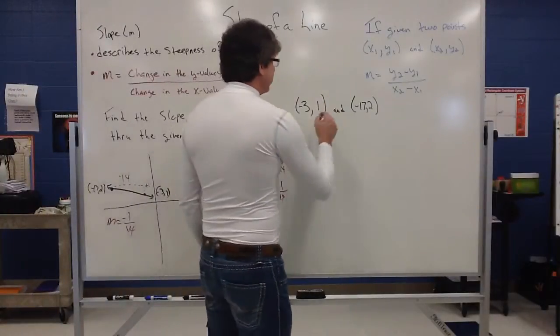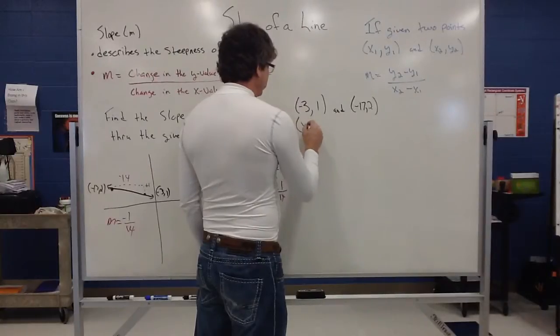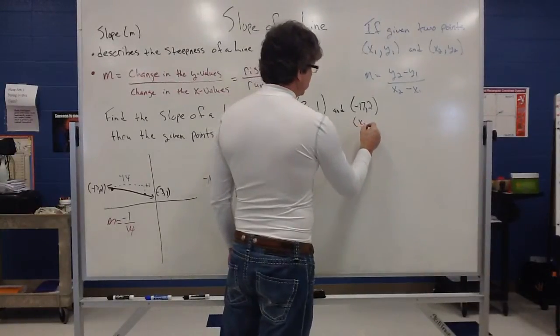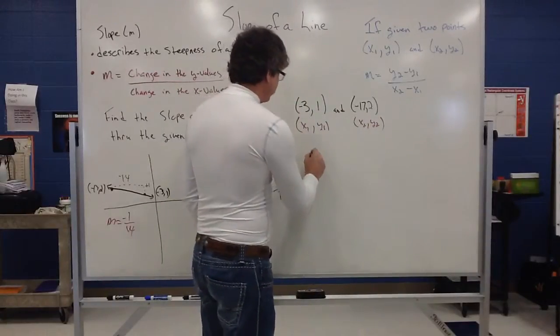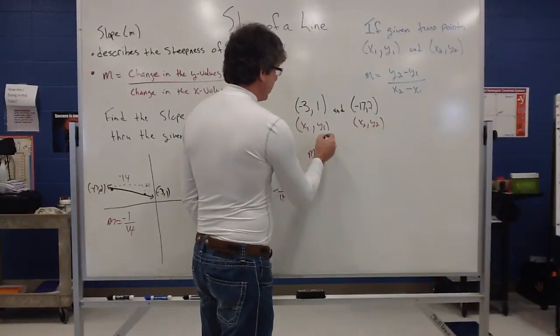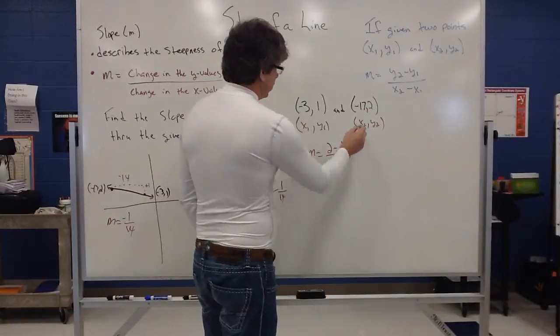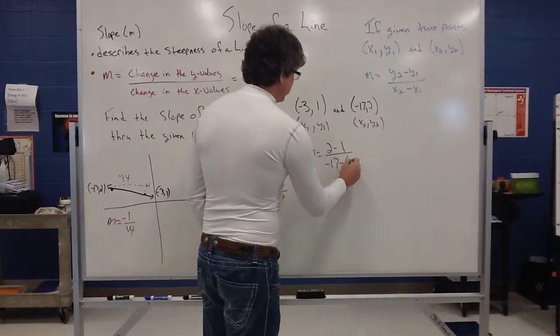Now if I'm using my formula, the change in y over the change in x, which means subtracting those values, just label x1, y1, and label x2, y2. And this will give you some structure. So my slope is going to be y2 minus y1, so 2 minus 1 is going to be the numerator. x2 minus x1, so that's going to be (-17) take away (-3).